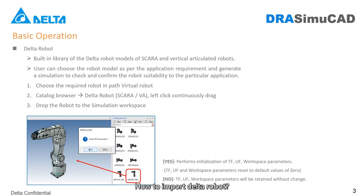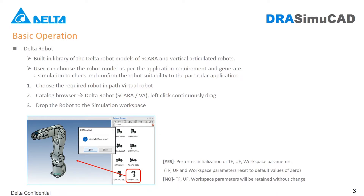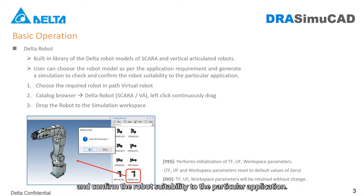How to import Delta robot. The built-in library includes Delta robot models of SCARA and vertical articulated robots. Users can choose the robot model as per the application requirement and generate a simulation to check and confirm the robot suitability to the particular application.